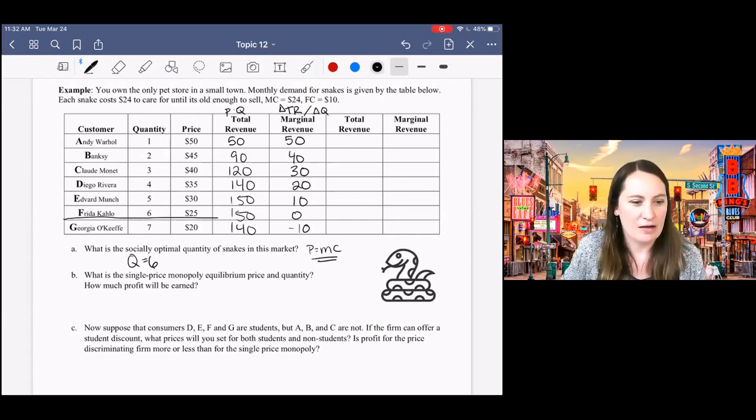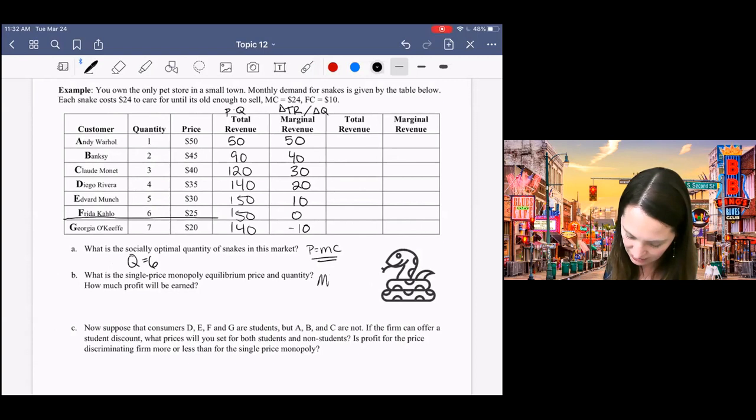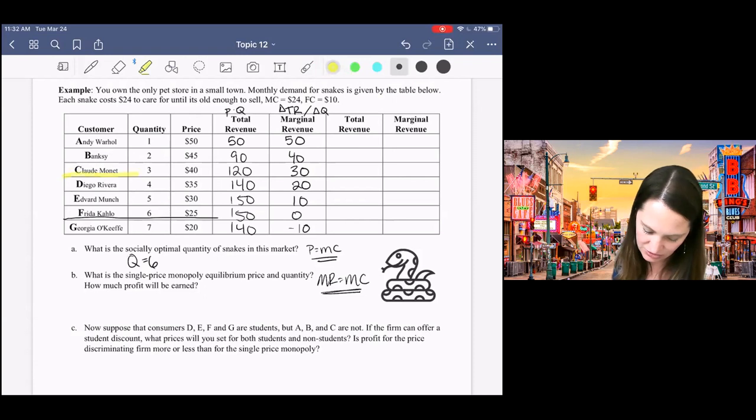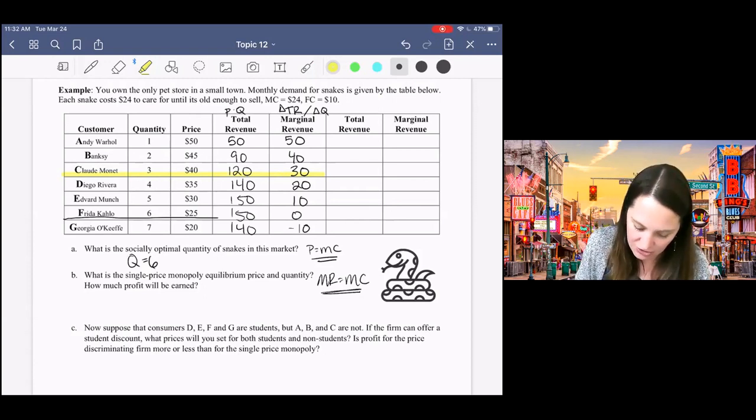What's the market equilibrium price and quantity for the single price monopoly? So again, I want to compare my marginal revenue to marginal cost. So I'm going to compare that marginal revenue I just calculated to this $24 marginal cost, which is given in the problem. And I can see that I'm going to sell just three snakes, and I'm going to charge a price of $40.